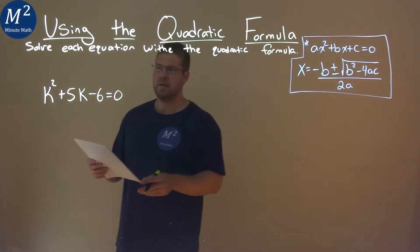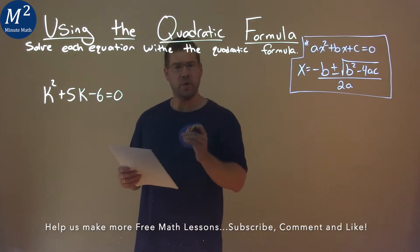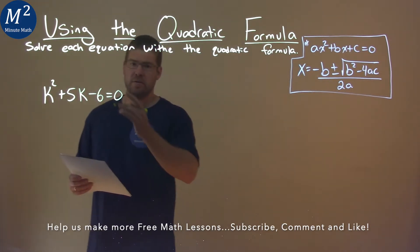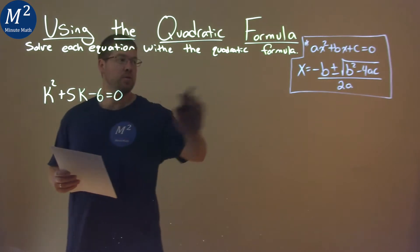We're given this problem right here: k² + 5k - 6 = 0, and we need to solve this using the quadratic formula. Luckily our equation is already equal to 0, so we can use the quadratic formula.